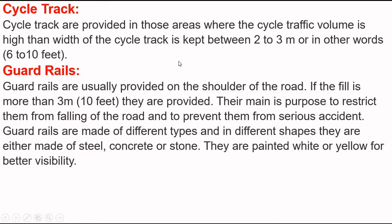The next element is guardrails. Guardrails are usually provided on the shoulder of the road if the fill is more than 3 meters or 10 feet. Their main purpose is to restrict vehicles from falling off the road and to prevent serious accidents. Guardrails are made of different types and shapes — either steel, concrete, or stone — and they are painted white or yellow for better visibility.